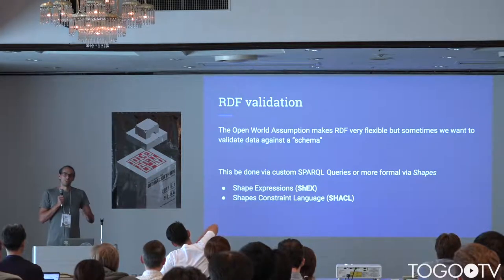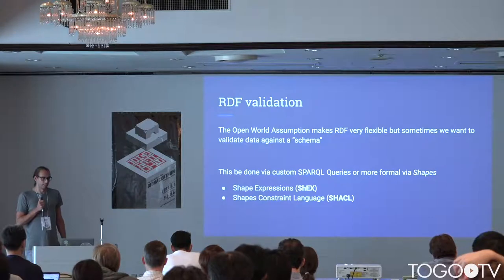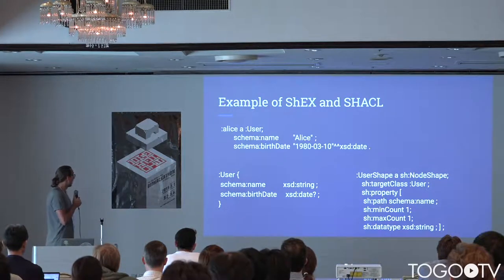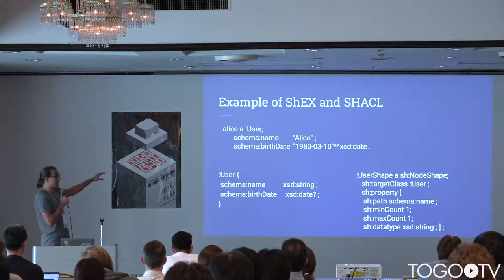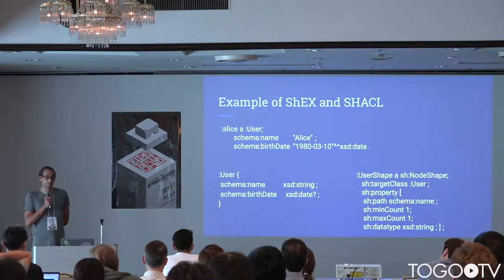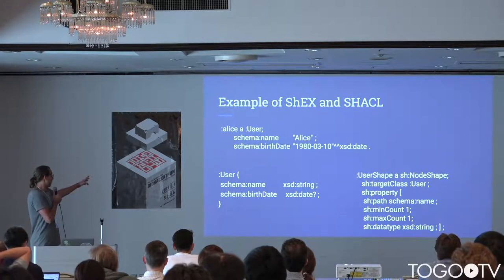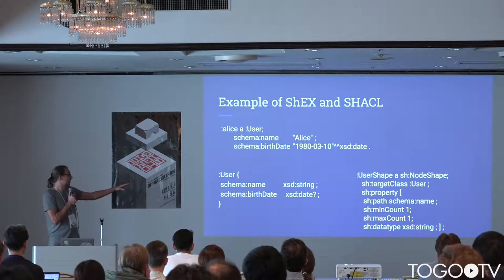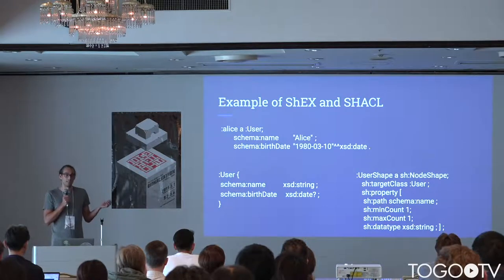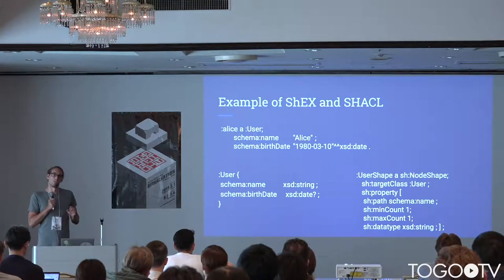We have two standards, ShEx and SHACL, that have emerged over the years. As an example for ShEx and SHACL, we can see a triple: the thing is a user, Alice has a name 'Alice' and a birth date which is a certain date. On the left side we have the ShEx example — looks familiar, pretty easy: the user has a name and a birth date. On the right side there's the SHACL example, which basically tells us the same but is a little more concrete because it defines a minimum and maximum count, saying we need exactly one name.